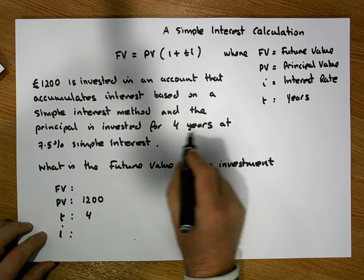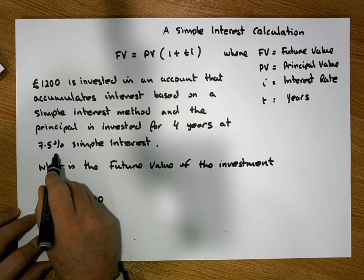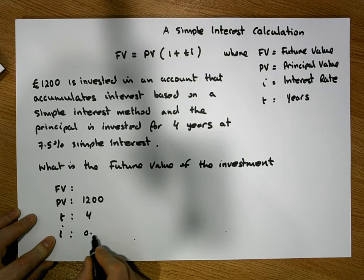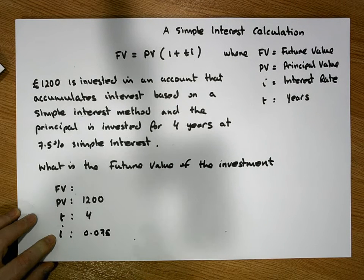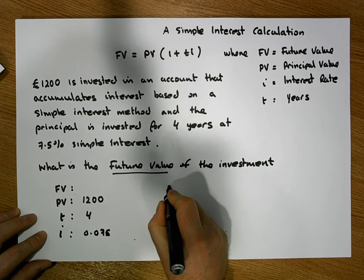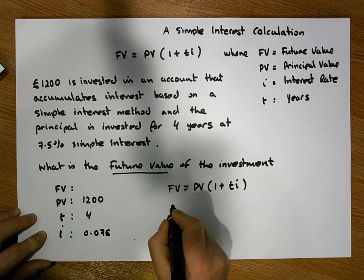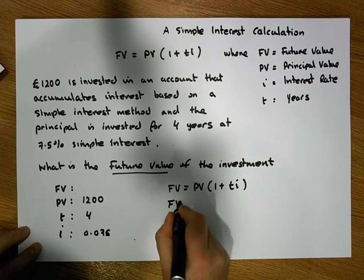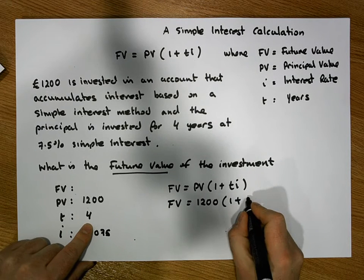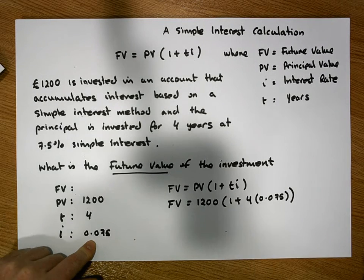It's invested at 7.5% simple interest. It's important that we convert our percentage into a decimal representation by dividing by 100, so our interest rate I is 0.075. The question asks for the future value. Using our formula, the future value is equal to the principal value times one plus T times I, and substituting in everything we have: FV equals 1,200 times one plus four times 0.075.